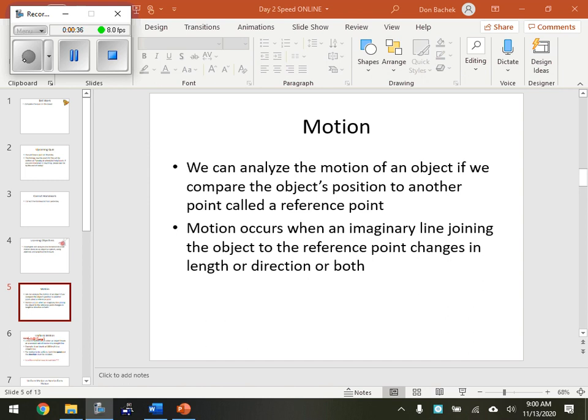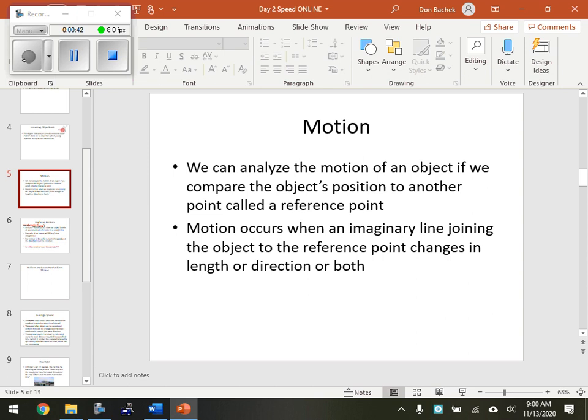Motion occurs when a matching line joins the object to the reference point changes in length or direction, or both. So we're just going to basically pick a point, and then we're going to pick another point, and we're going to reference those two points and see how things have changed over that period of time.